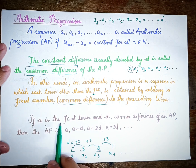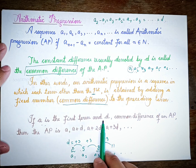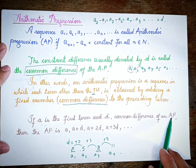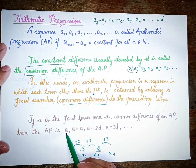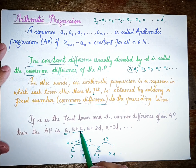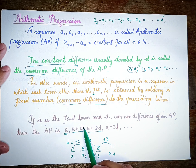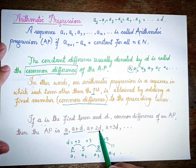If 'a' is the first term and 'd' is the common difference, then we will have the arithmetic progression. So the first term will be 'a'. The second term will be the first term plus the common difference, which is a plus d. For the third term, we need to add the common difference again, so we get a plus d plus d, which is a plus 2d.